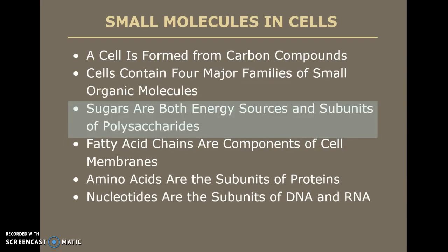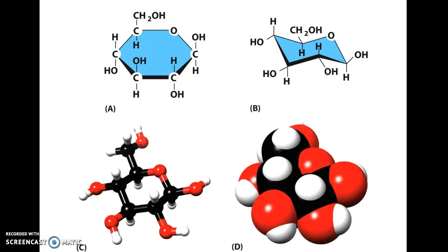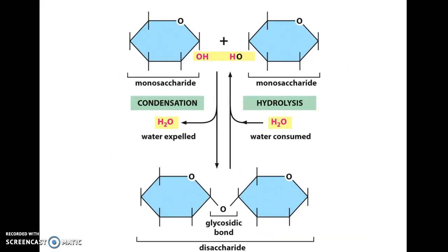Sugars are both structural as well as an energy source. They usually fall under the category of C to the N, H to the 2N, O to the N. Something like shown here is C6H12O6. More than one way to show this, the three-dimensional, the flat, the space filling. These sugars can be linked together using glycosidic linkages, where you do a dehydration synthesis to create a covalent bond between two sugars to form a disaccharide. And then you can also cut this glycosidic linkage by hydrolysis or adding water to the bond to cut it.